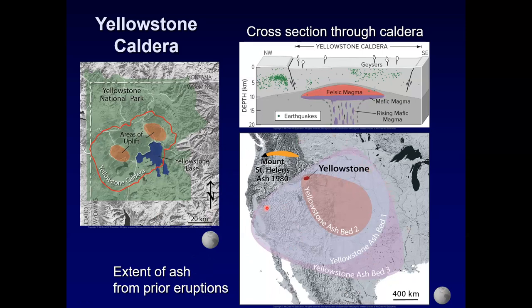The Mount St. Helens ash bed gives a sense of scale. Yellowstone has had enormous eruptions with ash deposits from three different eruptions covering vast areas. The average time between eruptions at Yellowstone is about 70,000 years. We can't predict everything perfectly, but it's been 640,000 years since the last eruption, so who knows what might happen in the future.